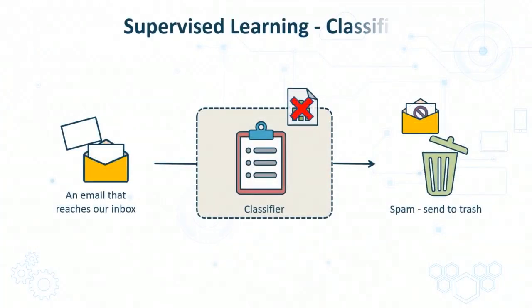An example of a supervised learning model is a classifier which can label an email which enters your inbox as spam or ham and then take an action accordingly. If the email is marked as spam, it'll be sent to your trash folder, and if not, it'll appear in your inbox.